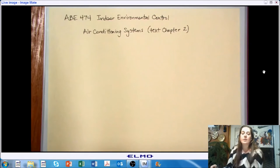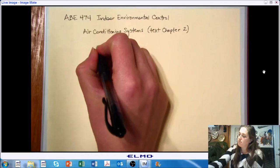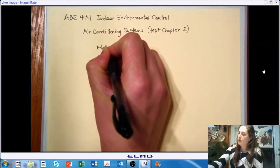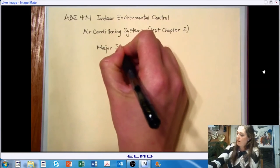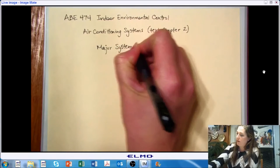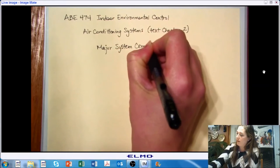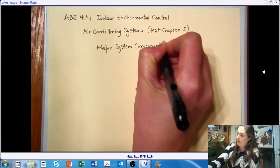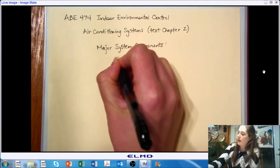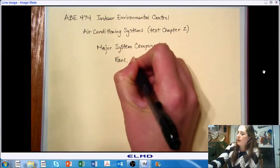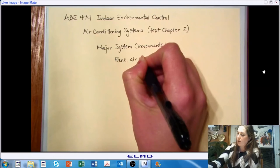First let's talk about what are some of the major system components that we might see inside of an air conditioning system. So we need a way to move air, so we're going to need fans or some other form of air handling.